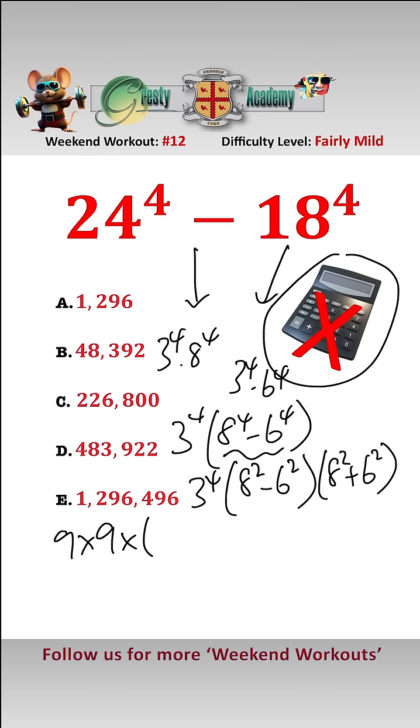8 squared take away 6 squared is 64 take away 36 which is 28, and 8 squared plus 6 squared is 64 add 36 which is 100. So doing this bit here that equals 9 times 9 times 2800.